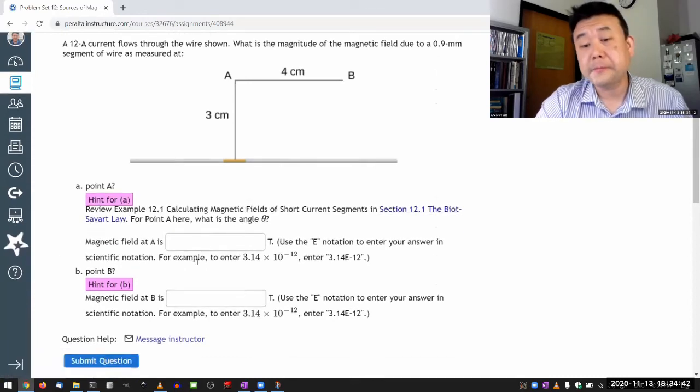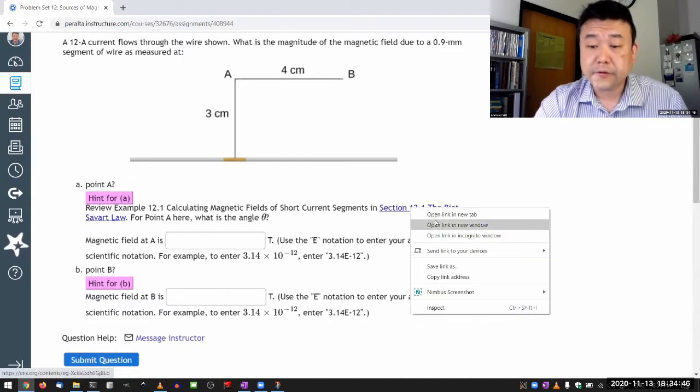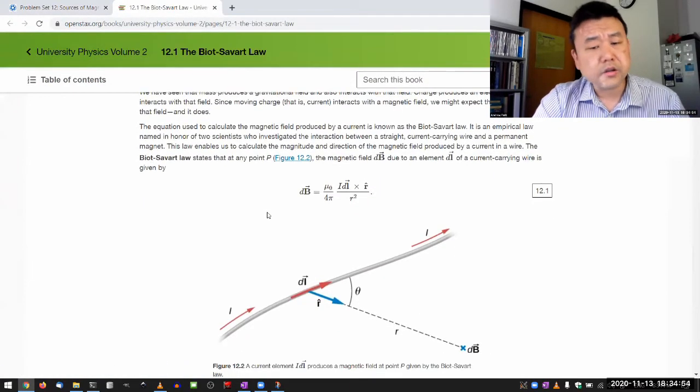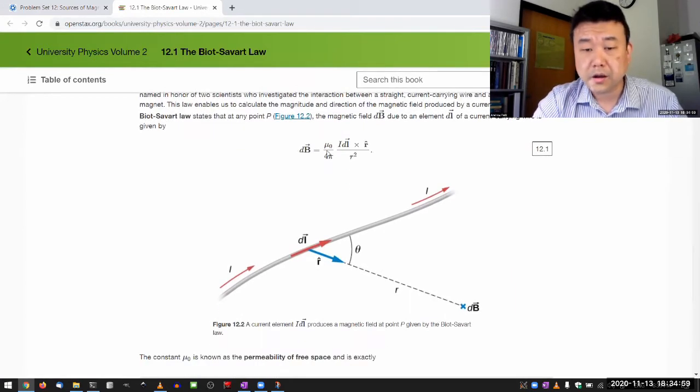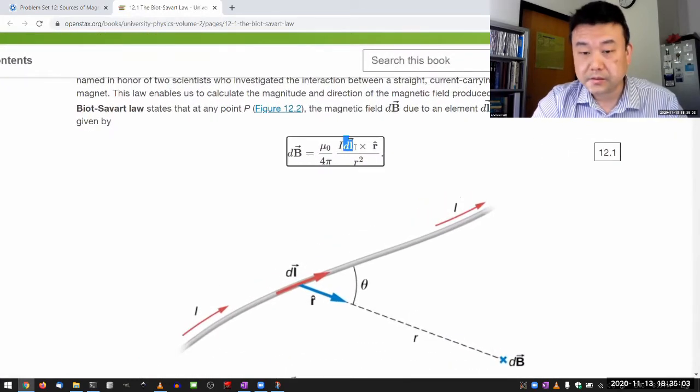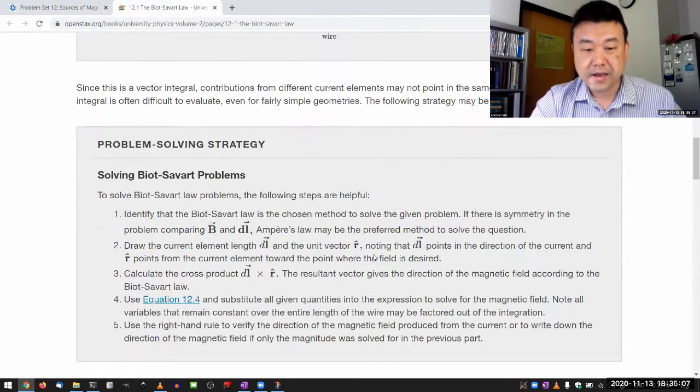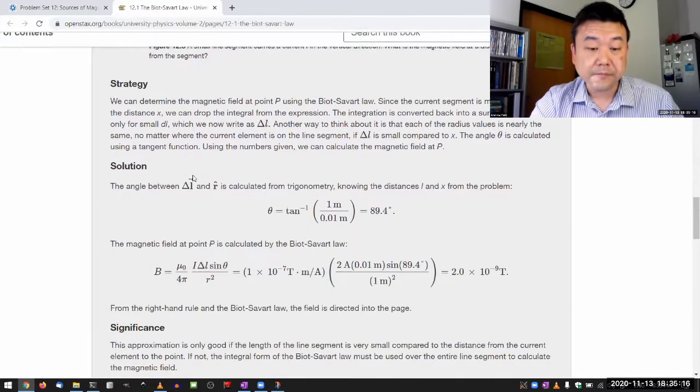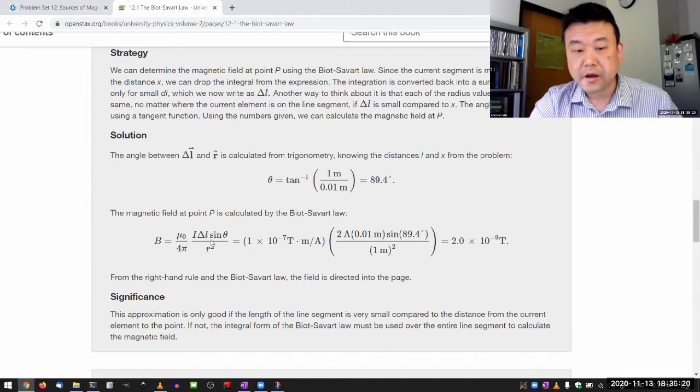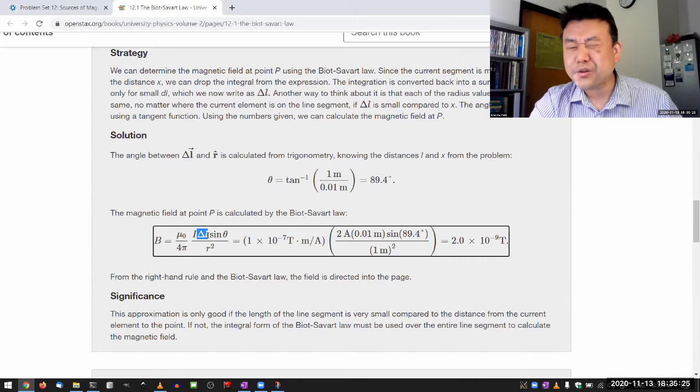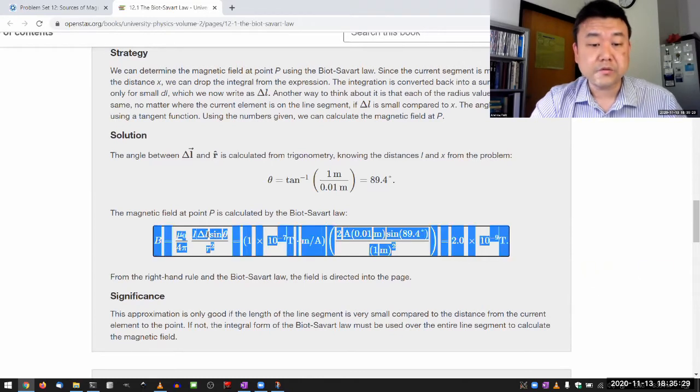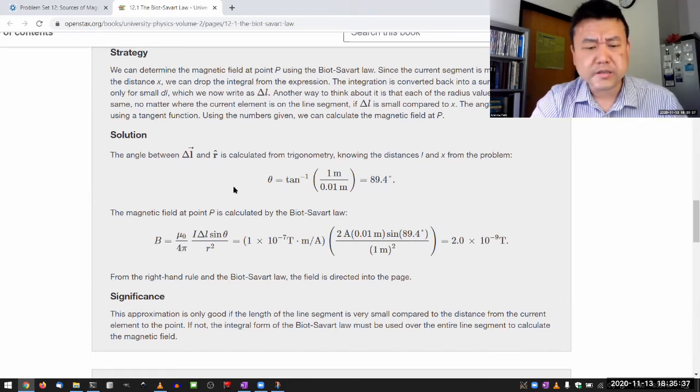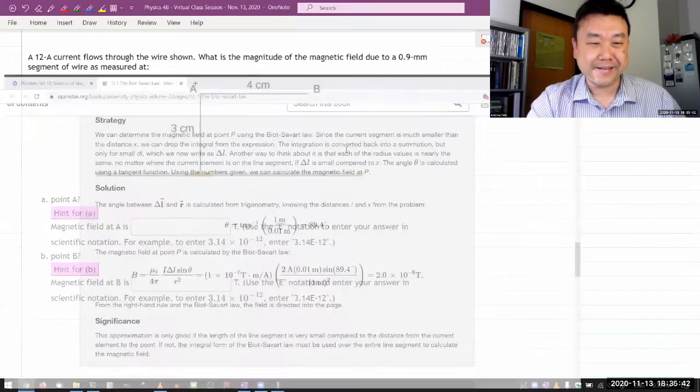The hint points you to where you can find help. If you go to section 12.1, the very first example deals with that exact situation. There's an approximation being made here. Biot-Savart's law applies to an infinitesimal segment of the current carrying wire. As they do in this example, calculating magnetic fields for short current segments, they are treating the segment of the wire as being small enough that using this directly without integrating will be accurate enough. We'll be using the same approximation because that makes things simpler, and that's the purpose of this question.